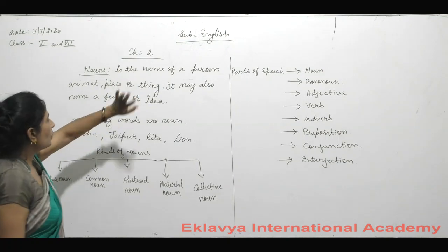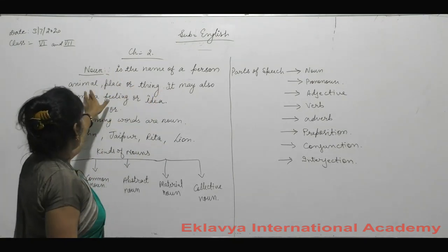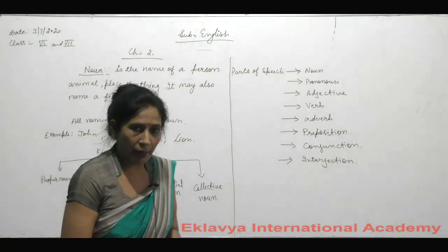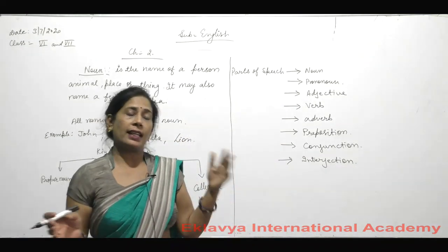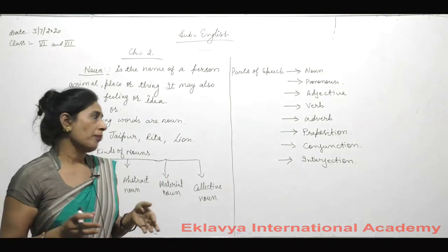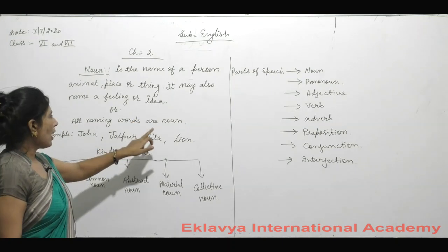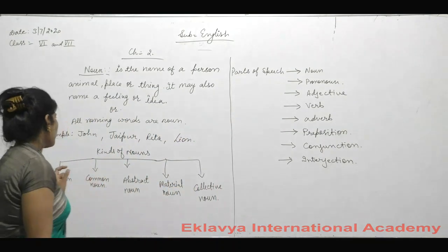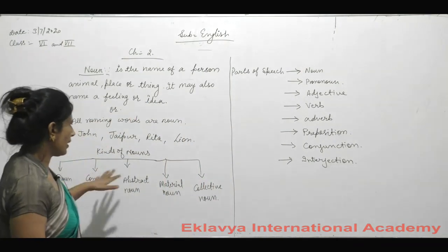First, noun. A noun is the name of a person, animal, place or thing. It may also name a feeling or idea — essentially any name. It may be a person, place, or anything. We can say all naming words are nouns. In short, the definition of noun is: all naming words are nouns. Examples: John, Jaipur, Rita — anything can be a noun.